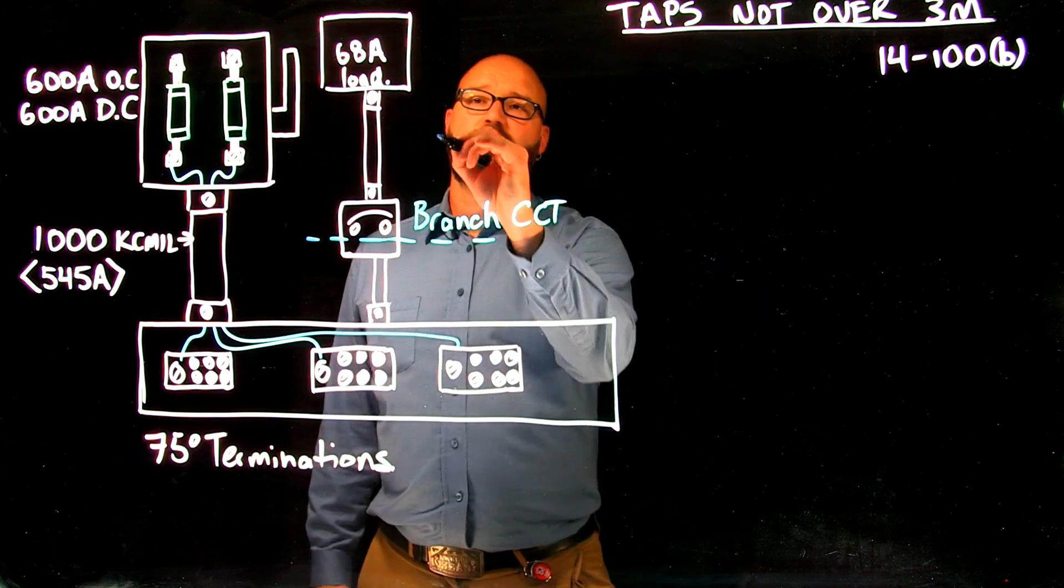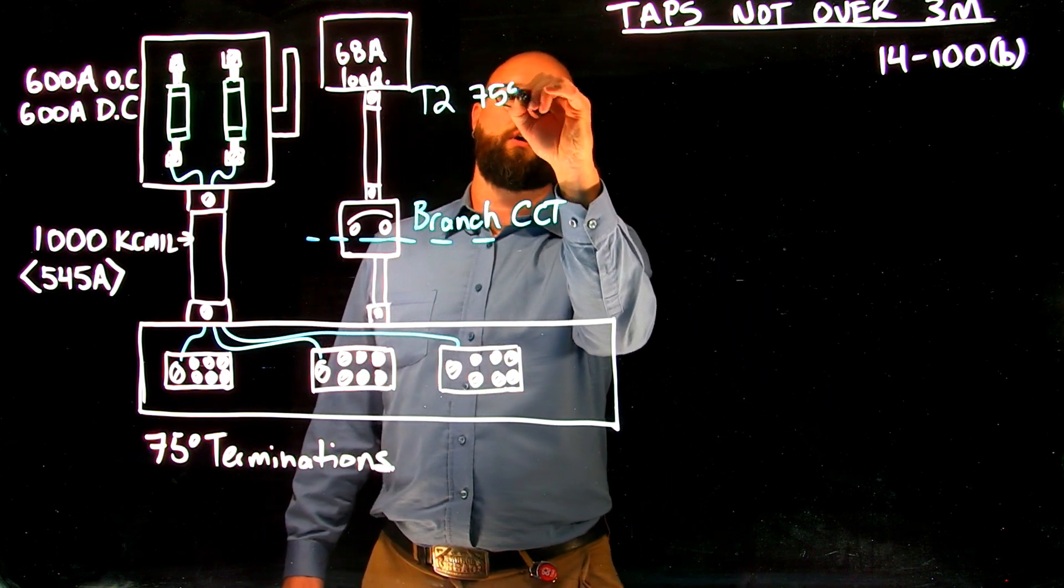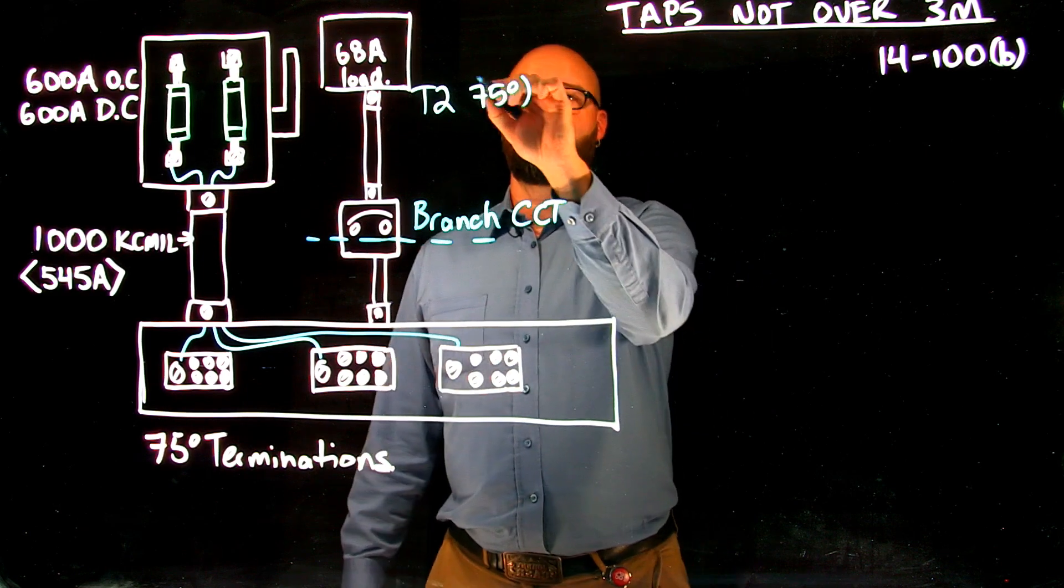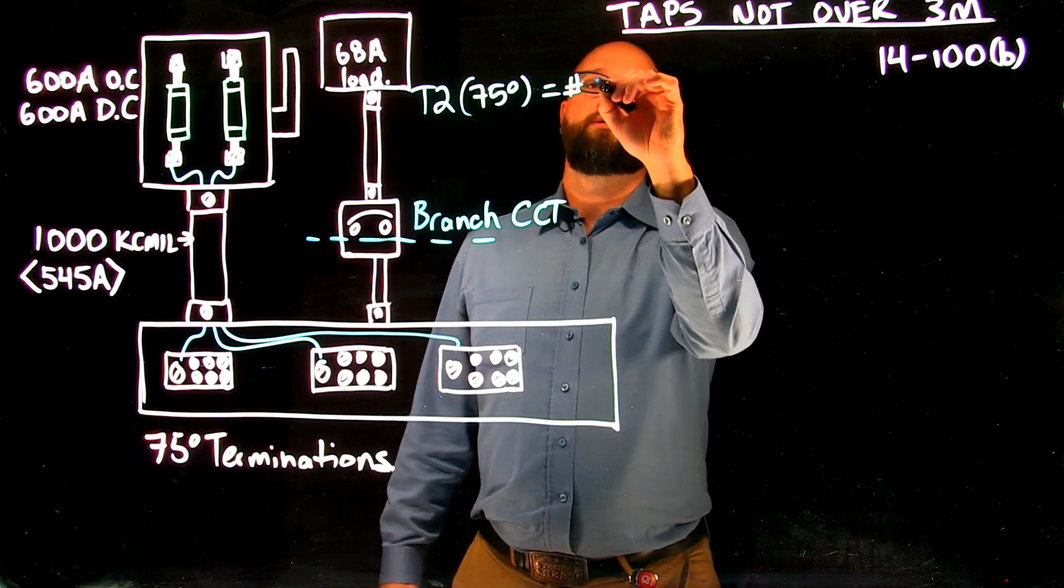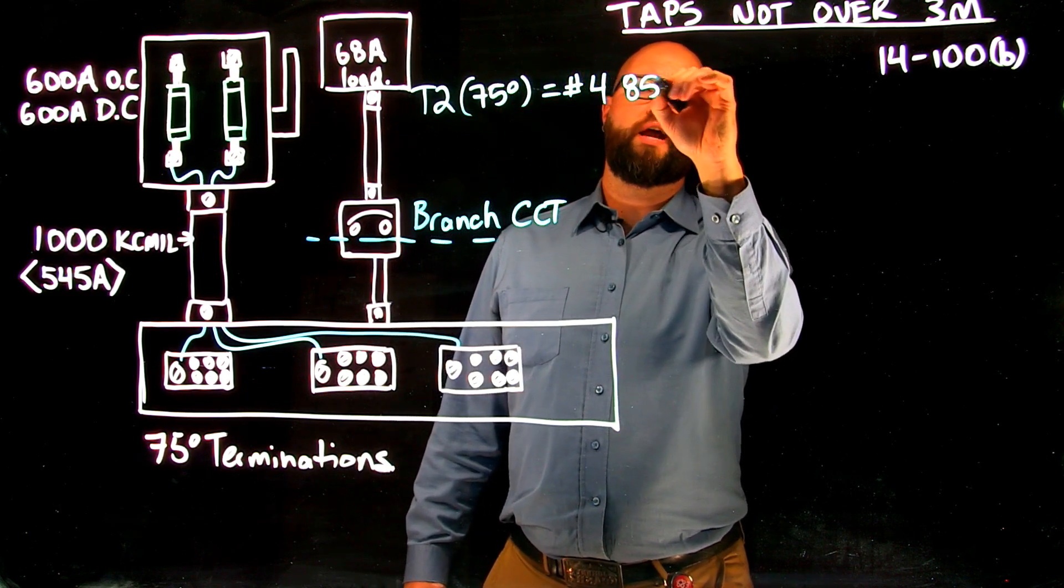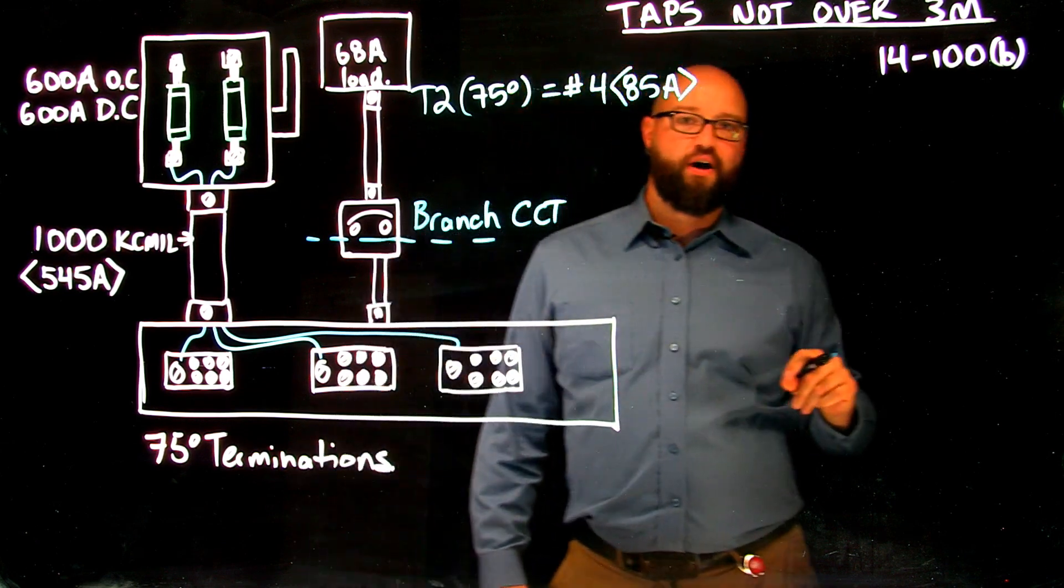So a 68 amp load, we are going to feed that with a conductor that is obviously larger than the load itself. So we're going to go to table two in the 75 degree column. And we are going to select a number four that is good for 85 amps. It has an ampacity of 85 amps.